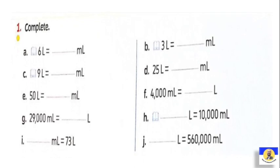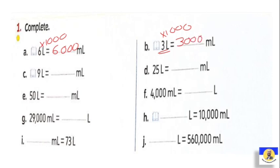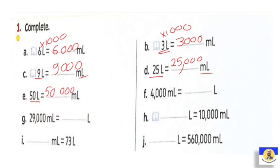Question number one: 6 liters equals how many milliliters? Since we multiply by 1000, 6 liters = 6000 mL. Then 3 liters × 1000 = 3000 mL. Nine liters = 9000 mL. Twenty-five liters = 25,000 mL. Fifty liters = 50,000 mL. We simply add three zeros.